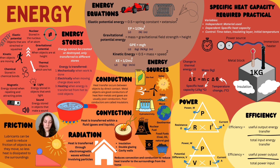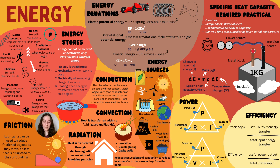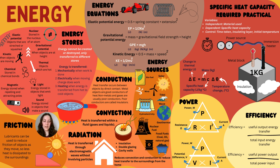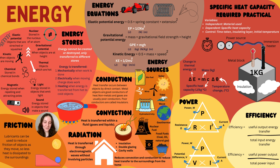Speaking of efficiency, there are two equations: useful output energy transfer divided by total input energy transfer, or efficiency equals useful power output divided by total power input. Power is measured in watts and can equal resistance in ohms times the current in amps squared (P = I²R). We also have power equaling voltage times current (P = IV). Remember that one of them has a square — it's really important to make sure you have the correct units in your answer.